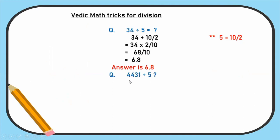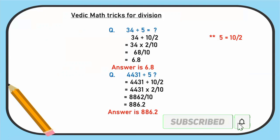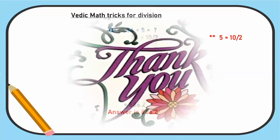Next one: 4431 divided by 5. Again 5 is equal to 10 by 2. So 4431 divided by 10 by 2, 4431 into 2 by 10. 4 2's are 8, 4 2's are 8, 3 2's are 6, 1 2's are 2 divided by 10. So 1 decimal point is 886.2. So the answer is 886.2. Hope it is helpful for you. You can use these tips for your calculations. Thank you.